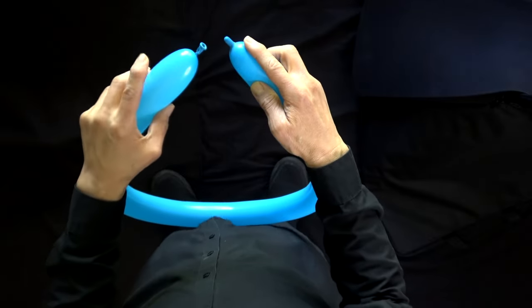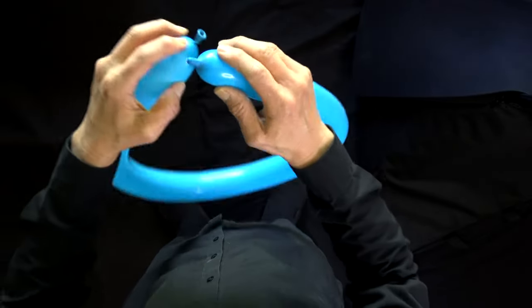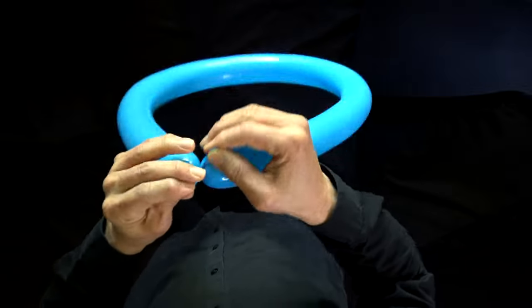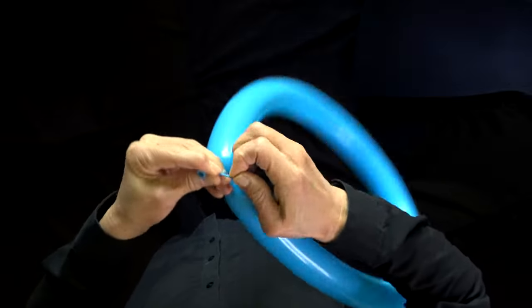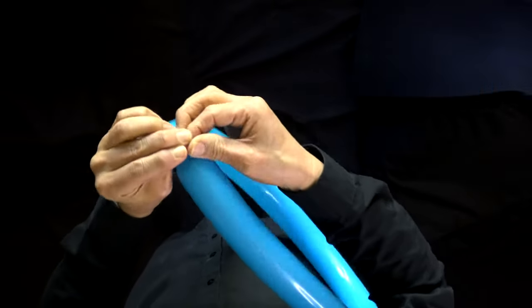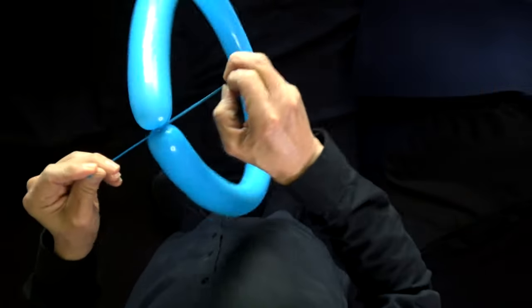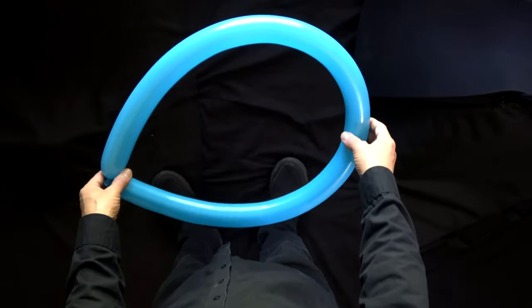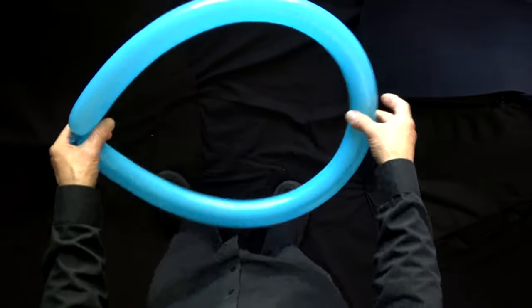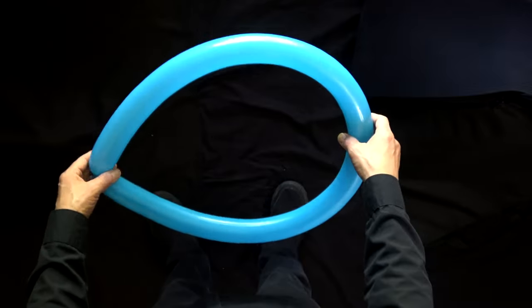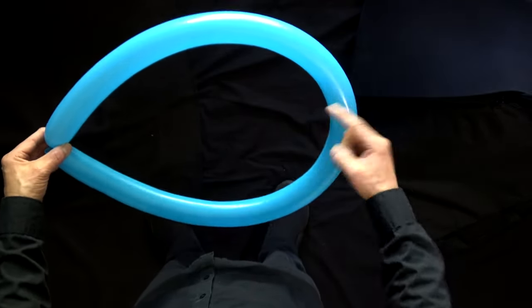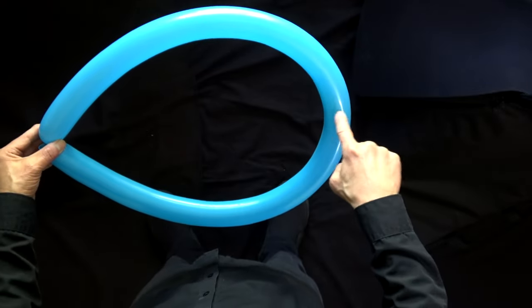Take the uninflated end and the nozzle, tie them together. You want this balloon to be fairly firm because that's the spring action that fires the arrow. Now we're going to make a basic twist in the middle at the midpoint right about here.